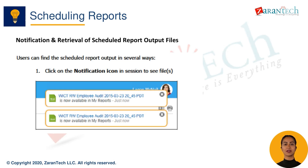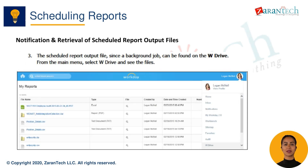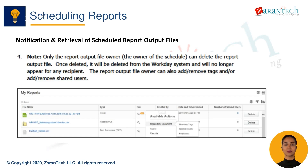When a scheduled report runs, the configured users will receive an email notification with the report output file attached. The email contains basic details like the report name, date, and run status. It also includes a link to the report output section where you can access all generated outputs from scheduled reports.